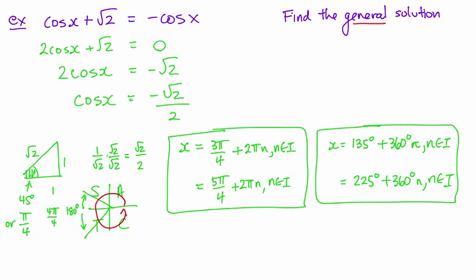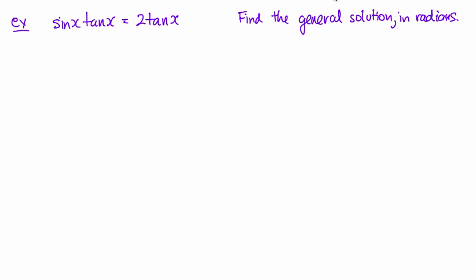Let's go on to the next kind. sin(x)tan(x)=2tan(x) and we're going to find the general solution in radians. So one common mistake with these kinds of questions is people really want to divide both sides by the same amount. In this case, like there's a tan(x) on both sides, you can just divide that out. Please do not do that. So instead of dividing both sides by anything, move things over to one side and factor. It's a much more successful strategy. You won't miss solutions.